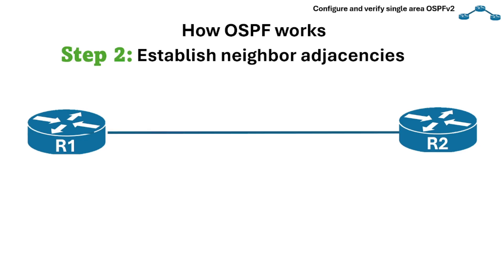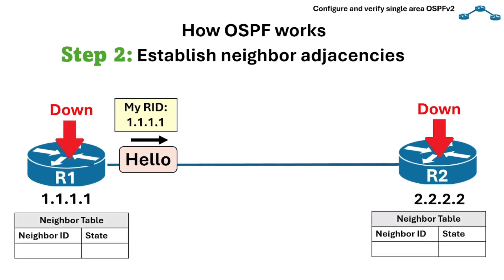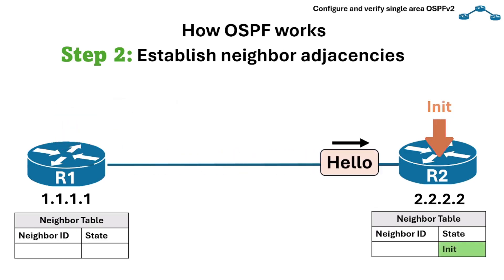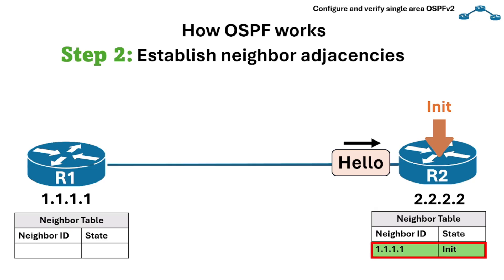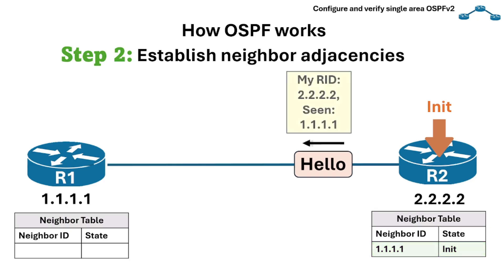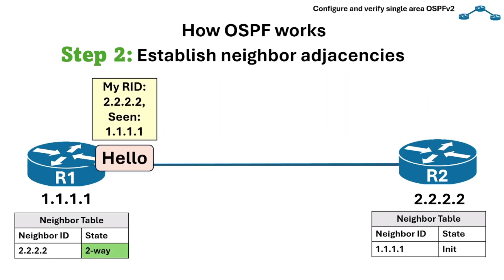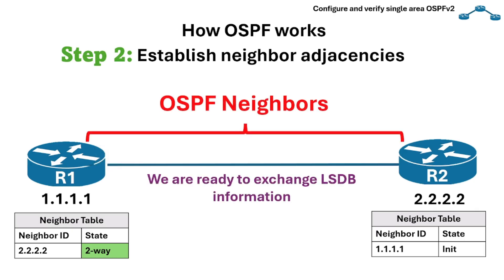This is how routers become two-way neighbors. In the beginning, both devices have an empty neighbor table because none of them have received hello packets — this is referred to as the down state. When R2 receives the hello packet from R1 but does not see its own router ID in the hello message, it transitions to the initialized state. R2 records R1's router ID in its neighbor table and starts including R1's router ID in the hello messages it sends. When R1 receives a hello packet from R2 and sees its own router ID in the message, it transitions its neighbor state with R2 to the two-way state, meaning both routers recognize each other as neighbors.